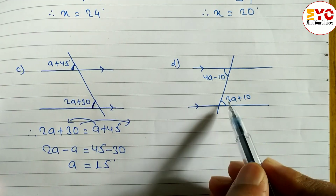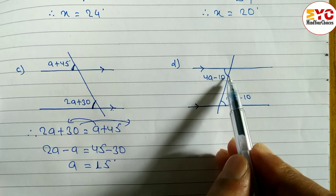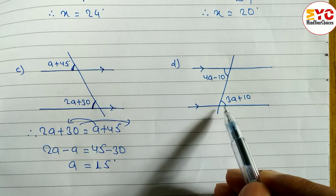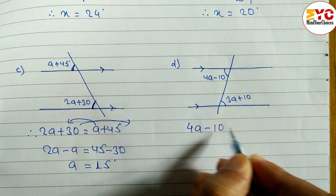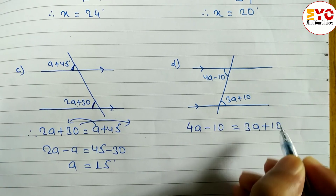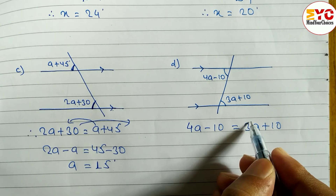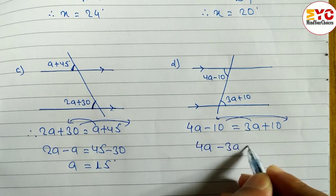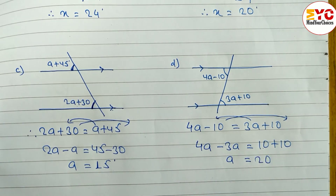Now look at question (d). The two angles form a Z-shape, which means they are alternate angles. The two parallel lines have one angle on the left and one on the right side of the transversal. Alternate angles are always equal, so we write: 4a − 10 = 3a + 10. Rearranging: 4a − 3a = 10 + 10, therefore a = 20 degrees.